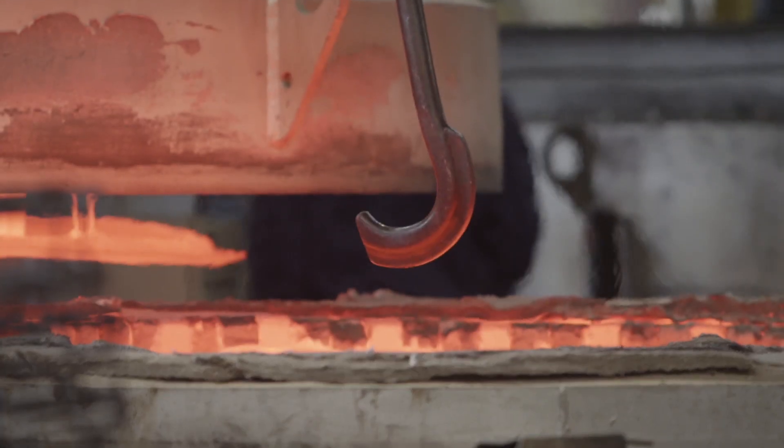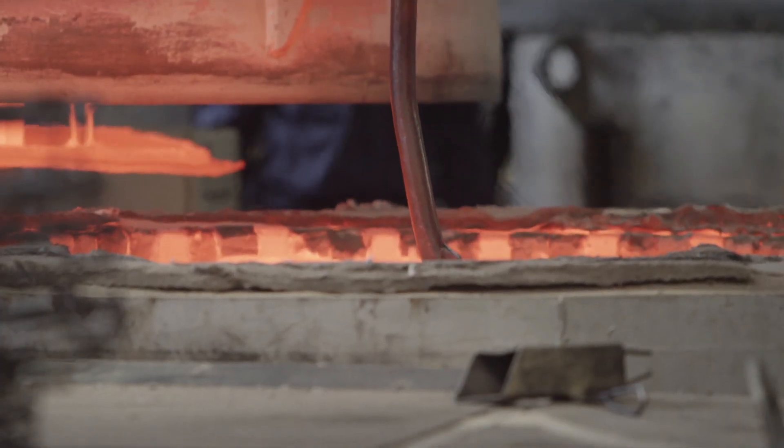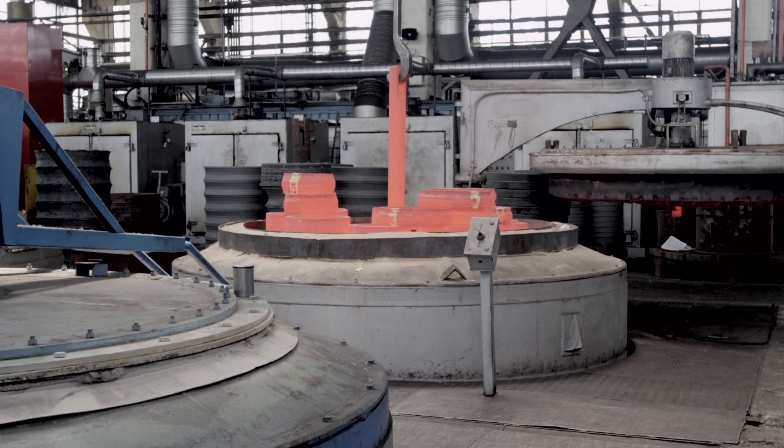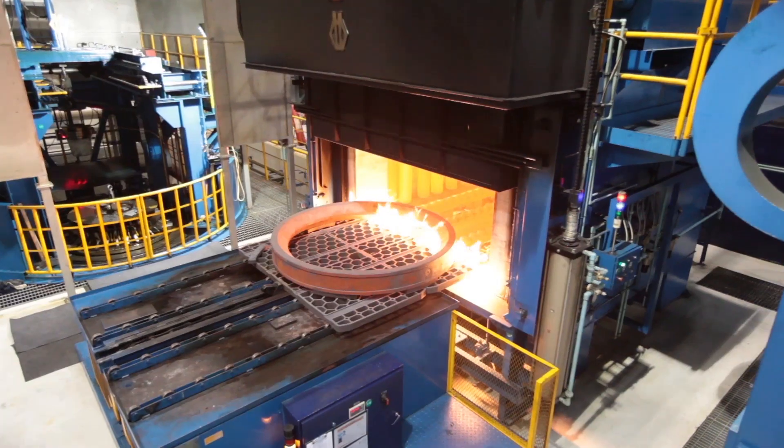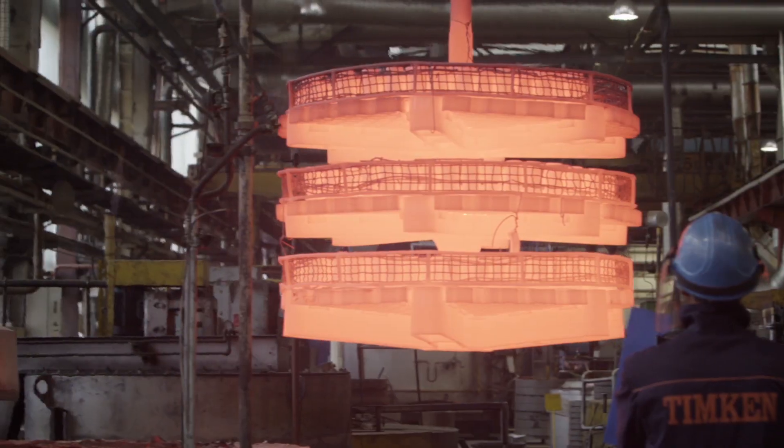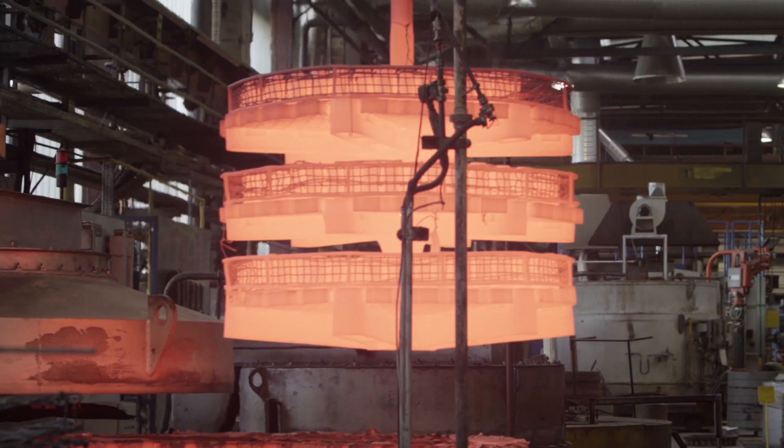Then the next step was to figure out how we were going to make this. Our traditional heat treat process for carburized bearings is to put them in a large pit furnace. For this size bearing, we found we'd have to put it in the pit furnace for 2 to 4 weeks.